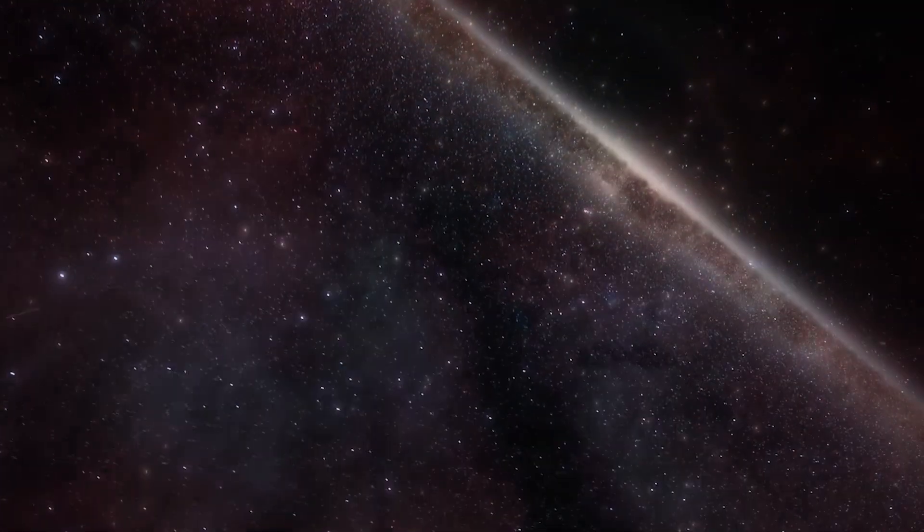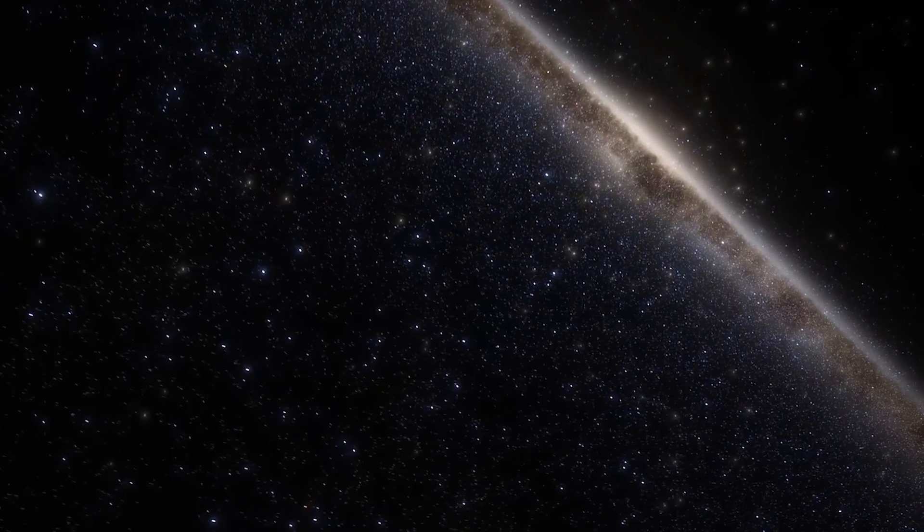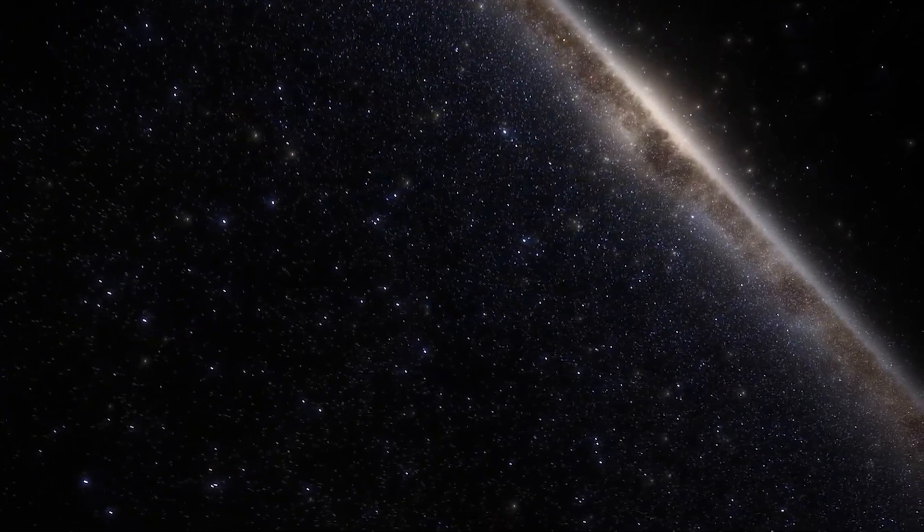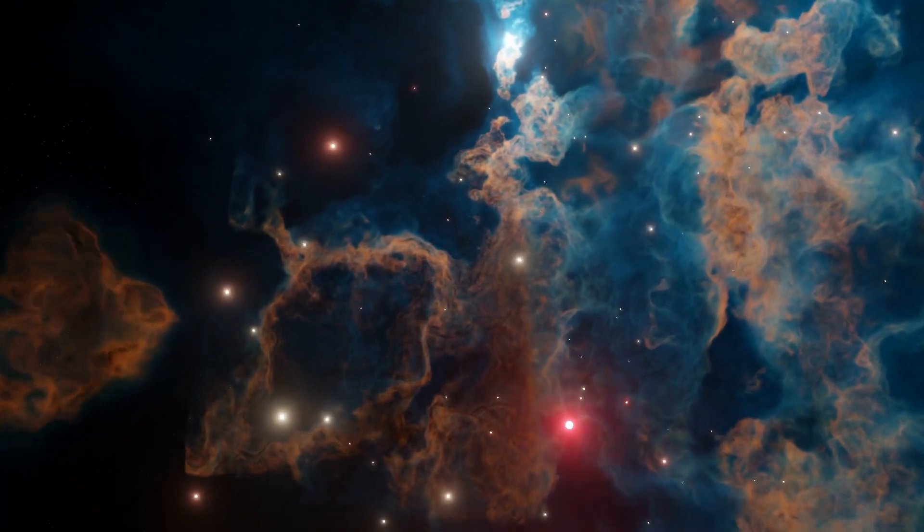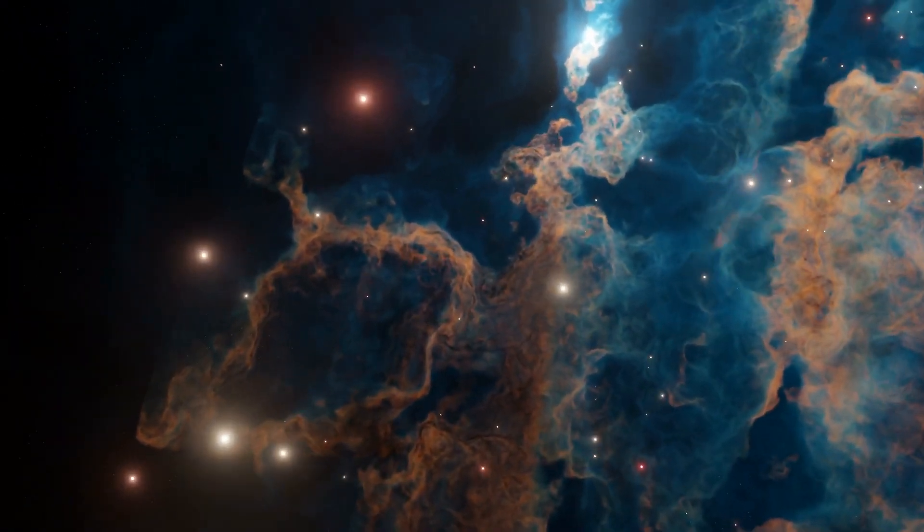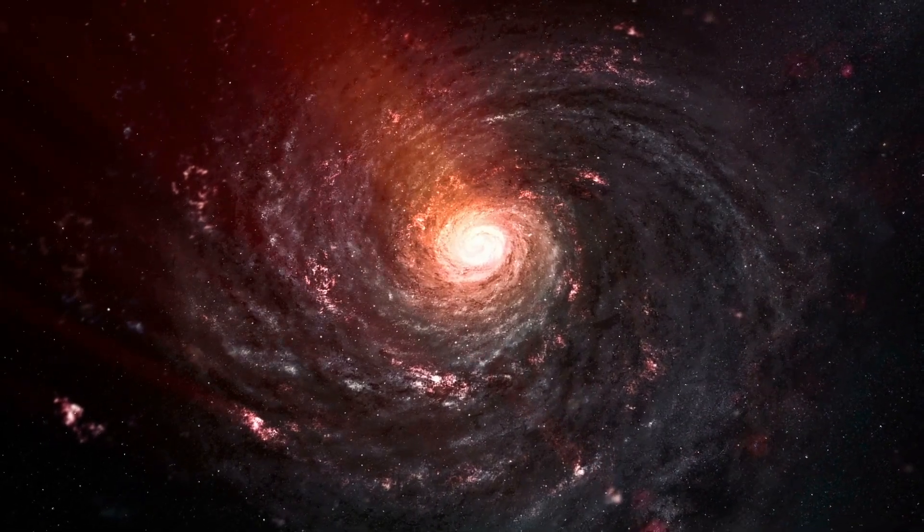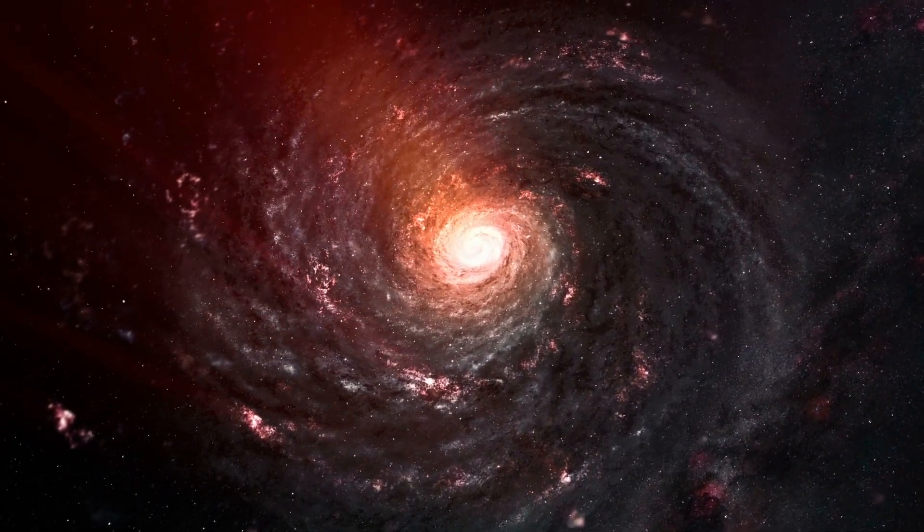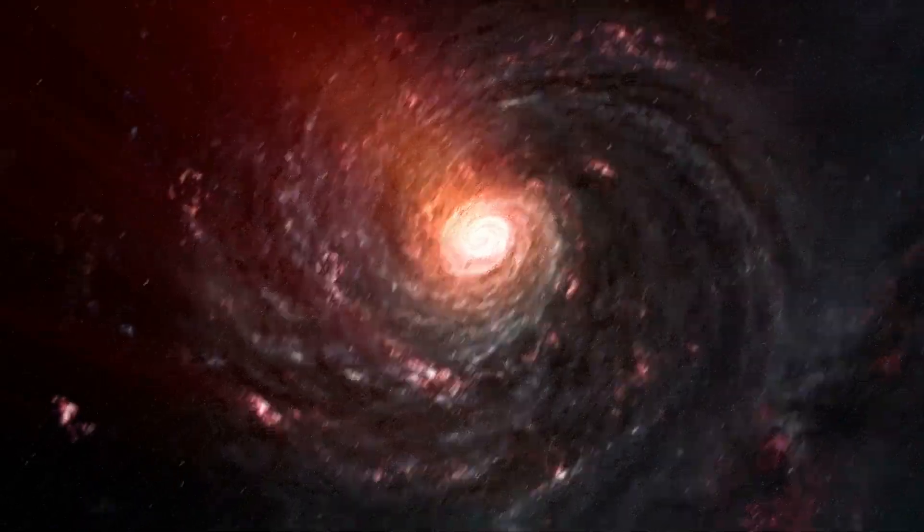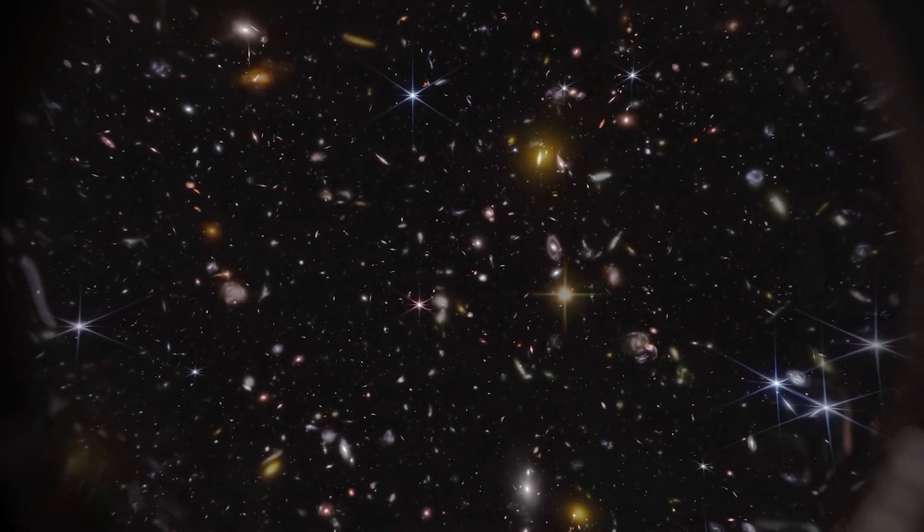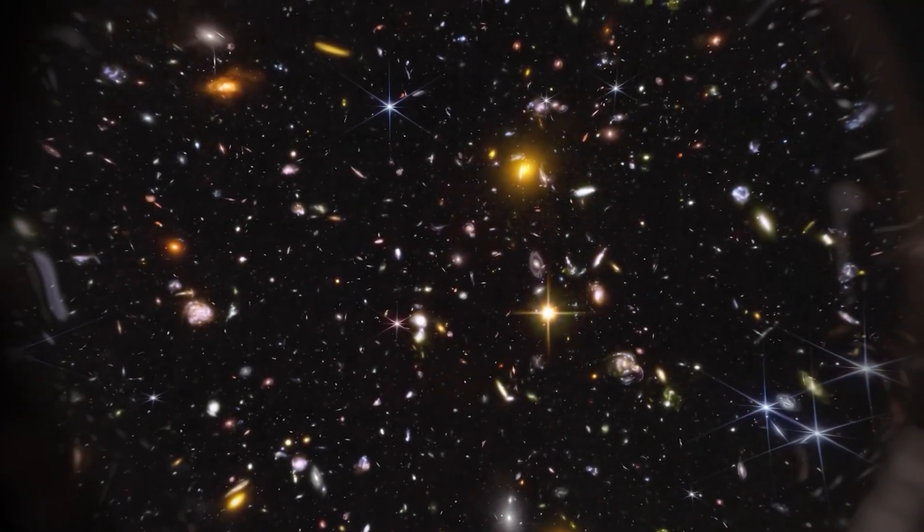That's because when we look at a distant galaxy, we are looking at something that existed in that position in the past. The light emitted from that galaxy would have taken millions or even billions of years to reach us. So, if we place a cosmological-sized ruler between that galaxy and our planet, we can see the proper distance between the two points. You can also consider it the separation between the Earth and the galaxy at any given time.